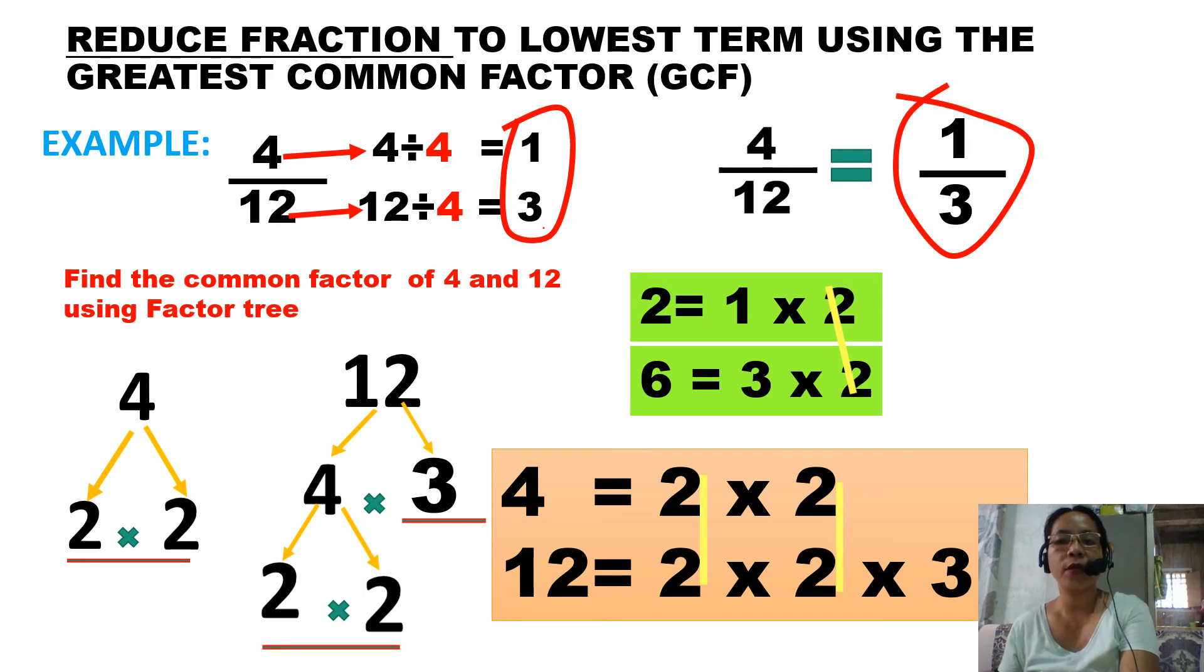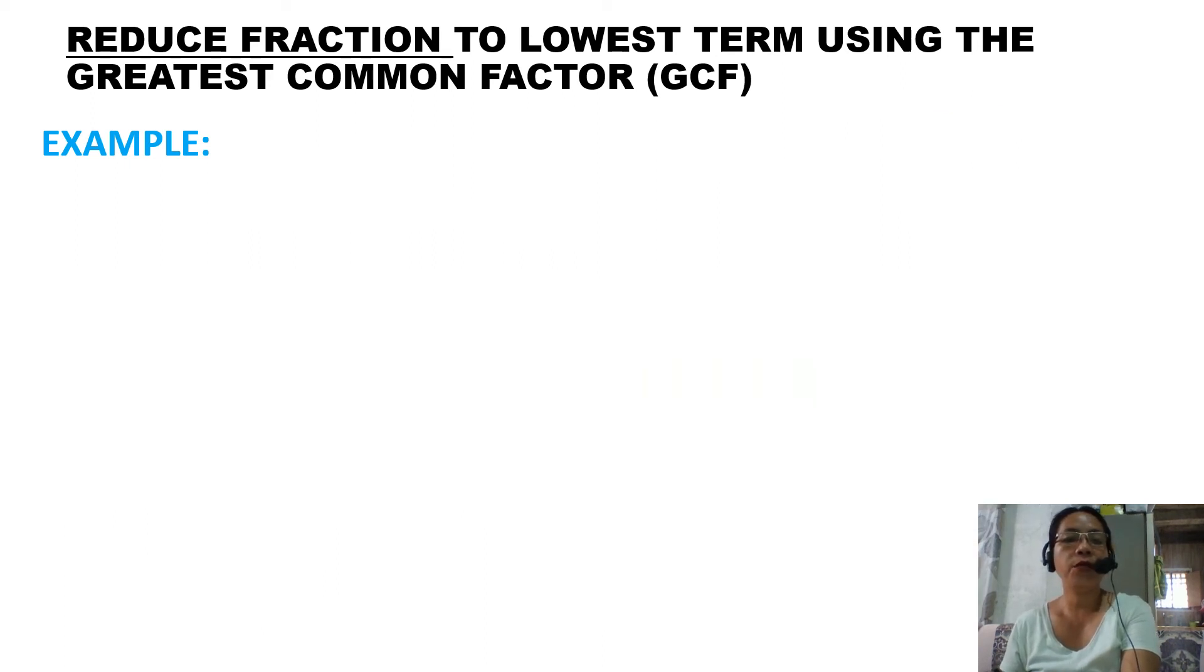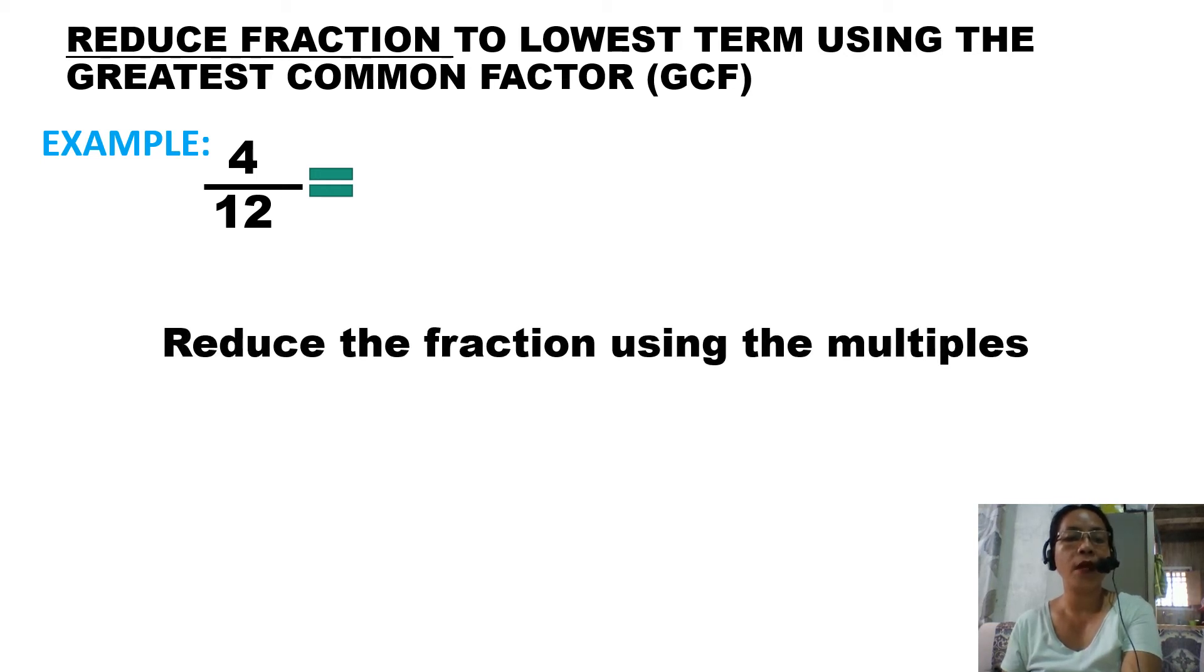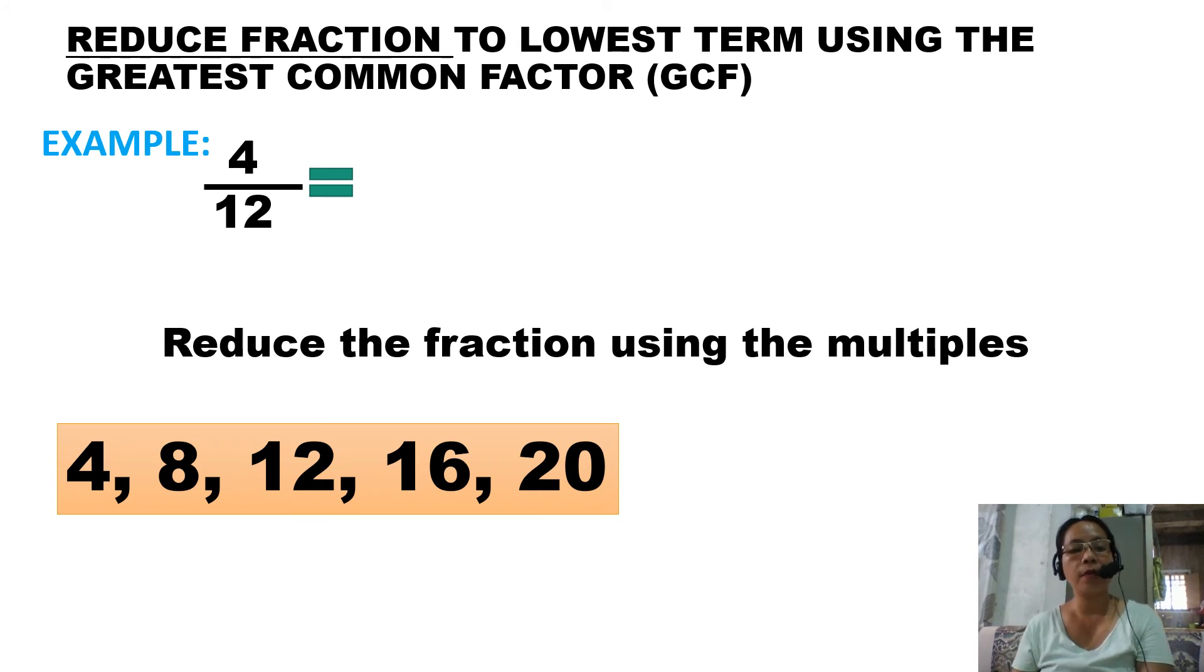Next, how to reduce fraction to lowest term using multiples. I have here an example again, 4/12. Let's find the multiples of 12 and 4. Since 12 can be found in the multiples of 4, I only use the multiples of 4. I wrote five multiples of 4: 4, 8, 12, 16, 20. If you notice, 12 is there and 4 is there too.